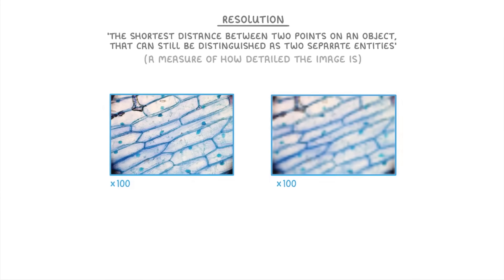For example if we look at these two images of the onion cells from earlier, we can see that they both have the same magnification because they both have times 100 in the bottom corner and the cells in each image both look the same size. However the one on the right looks much blurrier and this is because it has a lower resolution so we can't see the same level of detail. So in general just remember that the higher the resolution of an image the more details you'll be able to see and the less blurry it will look.